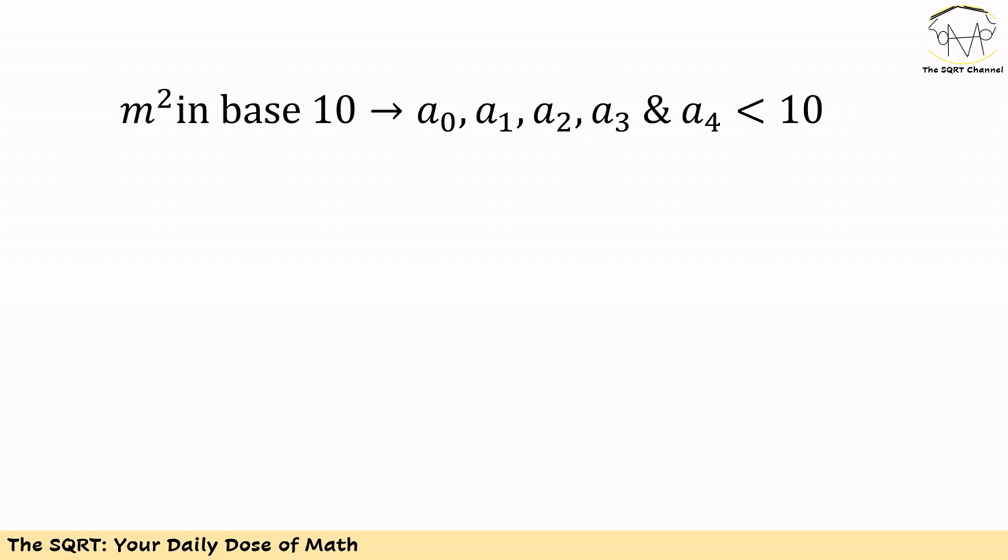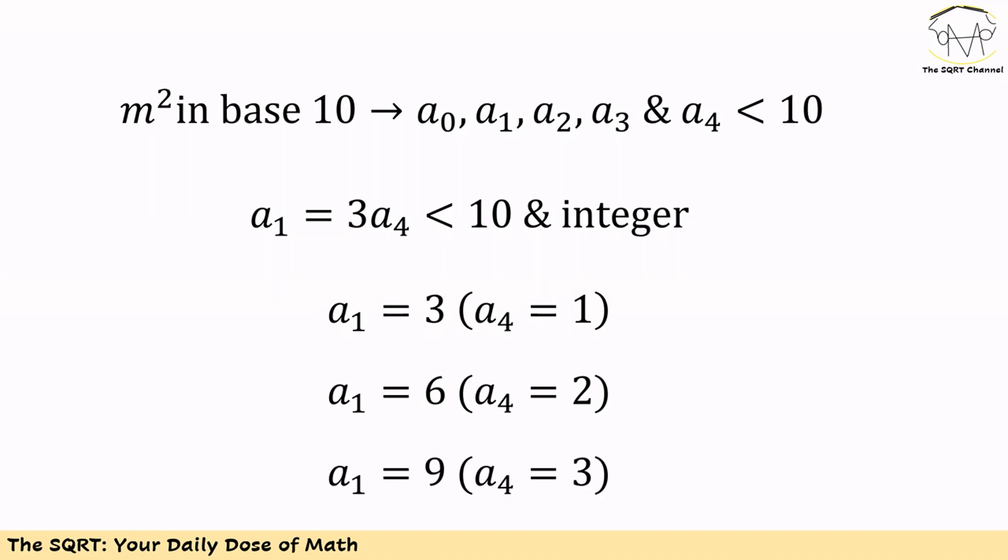To solve this problem, let's start with what we know about base 10. If a number is in base 10, then all the digits should be less than 10. Interestingly, one of the values should be three times another value. Basically, a1 is equal to 3 times a4, so a1 should be less than 10 and it should be an integer.